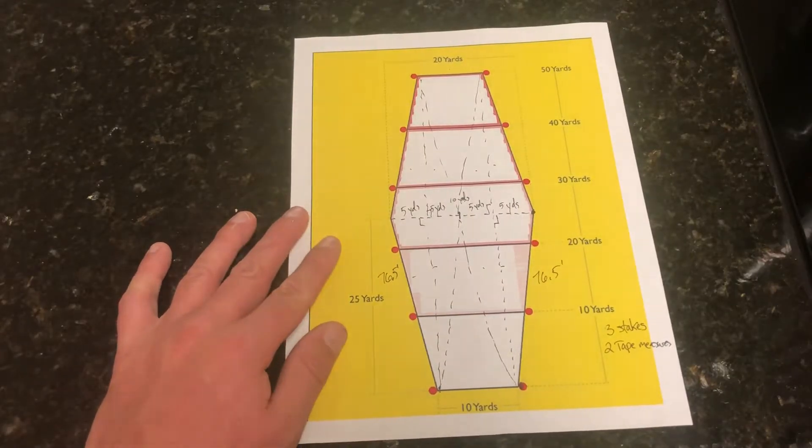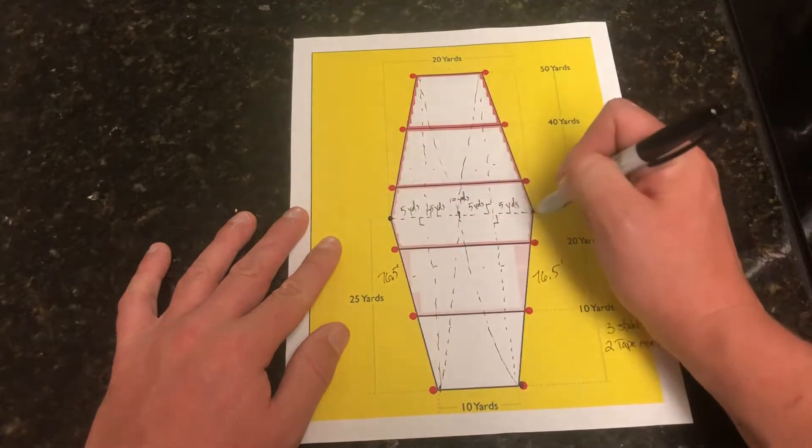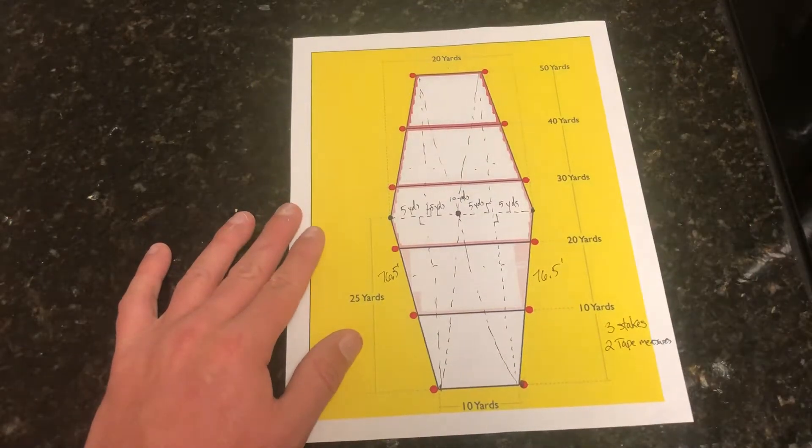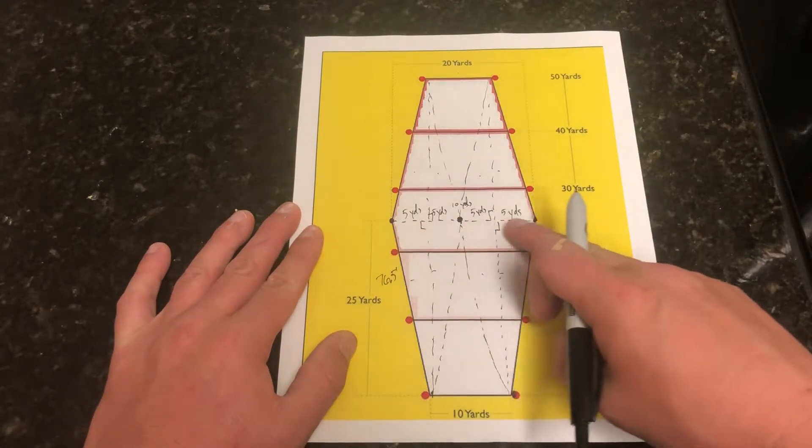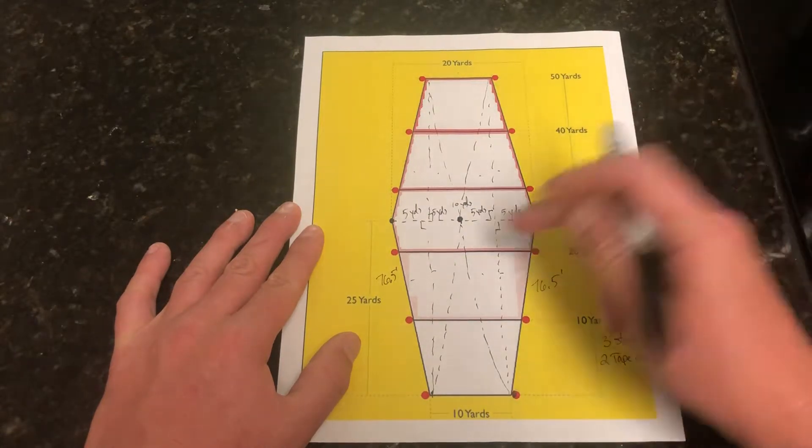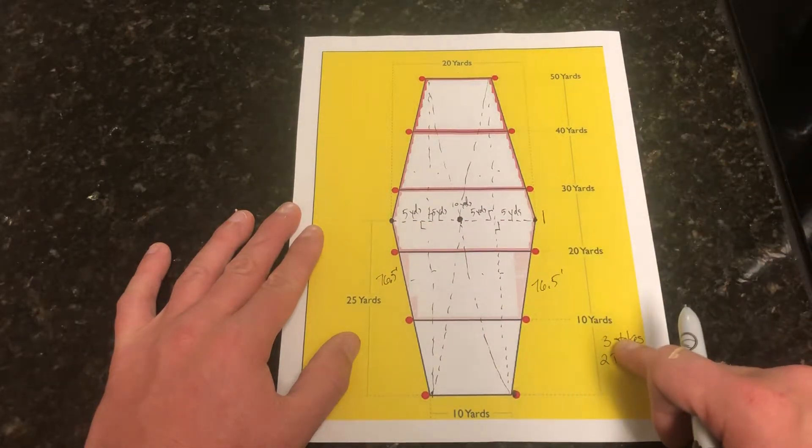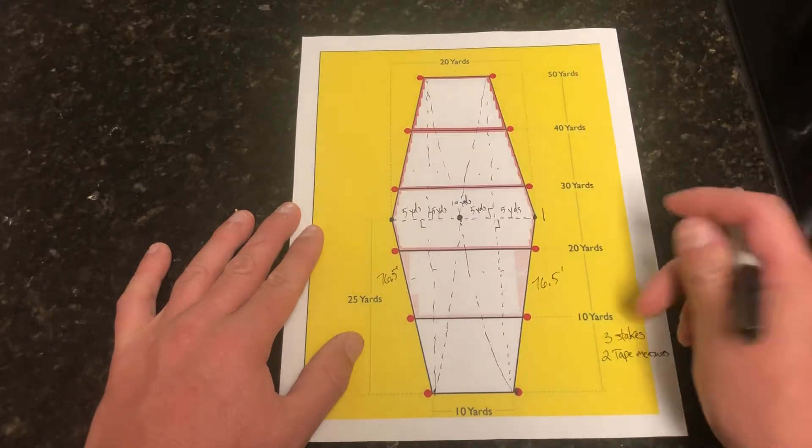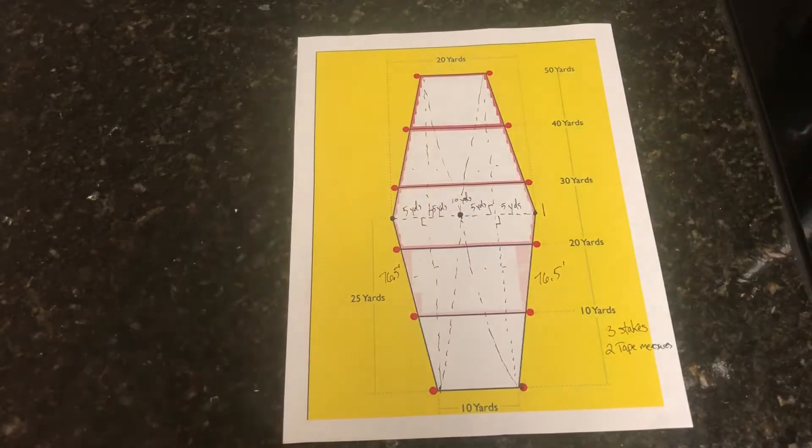What we can do to build this field and build it super fast is start by building our center line. You're actually going to build the field from the inside out. What you need to do to get the whole thing set up is start by measuring your 20 yard center line. This is step one. You're going to draw your tape measure out 60 feet.